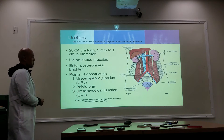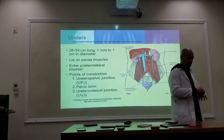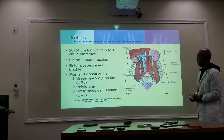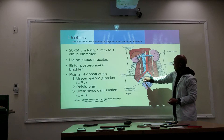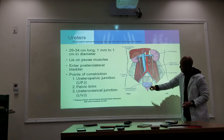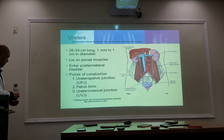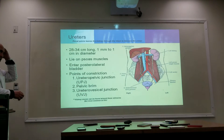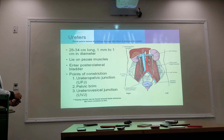There are three points of constriction in the ureters related to their anatomical location. The first is the UPJ — the ureteropelvic junction. The second constriction is where the ureter crosses the pelvic brim. The third is where the ureter joins the bladder — the ureterovesical junction. These slight narrowings mean that kidney stones can potentially get caught in any of these three areas.